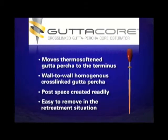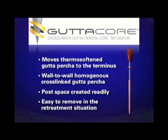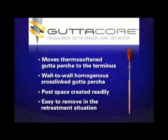I want to talk about GuttaCore. GuttaCore has replaced the stigma of the polysulfone plastic carrier. Now we have a material called gutta percha — a different formulation — that is the core. You can see the advantages: wall-to-wall gutta percha. Post space can be created much more easily than in the past, when we had a non-soluble, non-heat-sensitive material and sometimes needed special drills. Now everything has gotten a lot easier. Especially in retreatment, these carriers are readily removable if you have a couple of ideas.